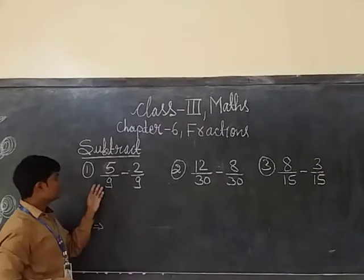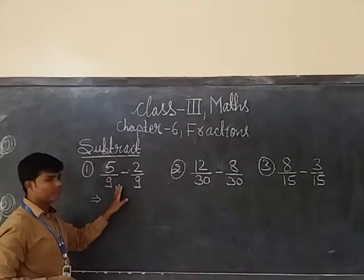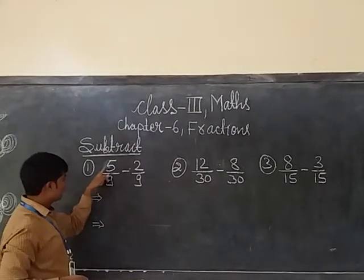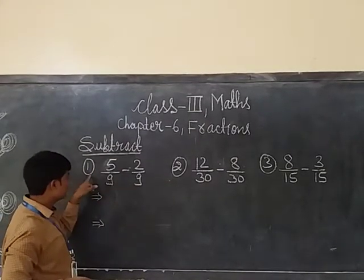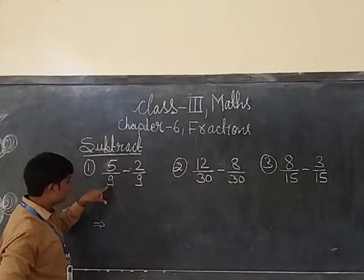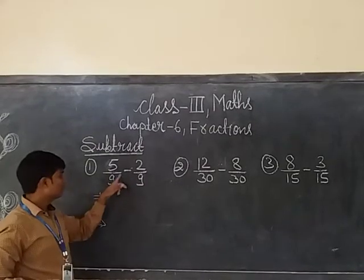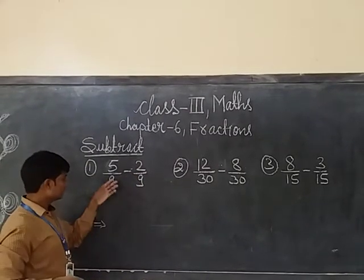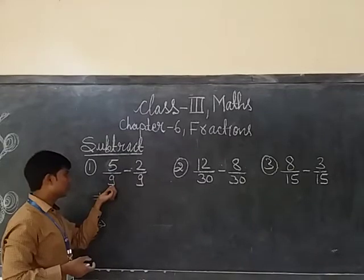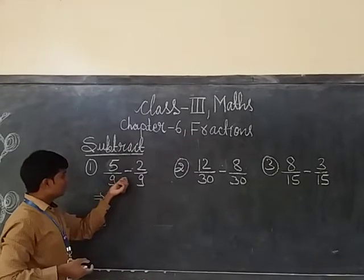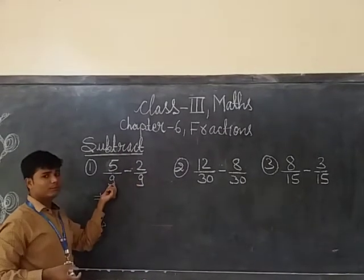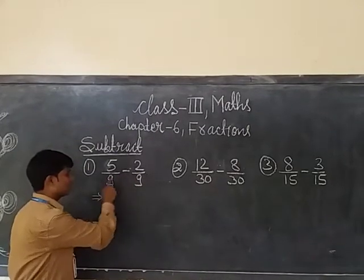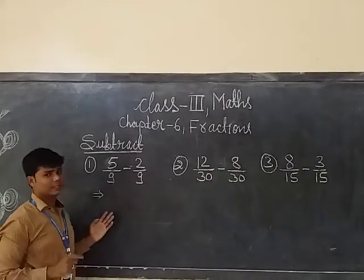The question is, we have to subtract the given fractions. Question number 1 is 5 by 9 minus 2 by 9. It means that we have to subtract 2 by 9 from 5 by 9, and both fractions are having the same denominator.